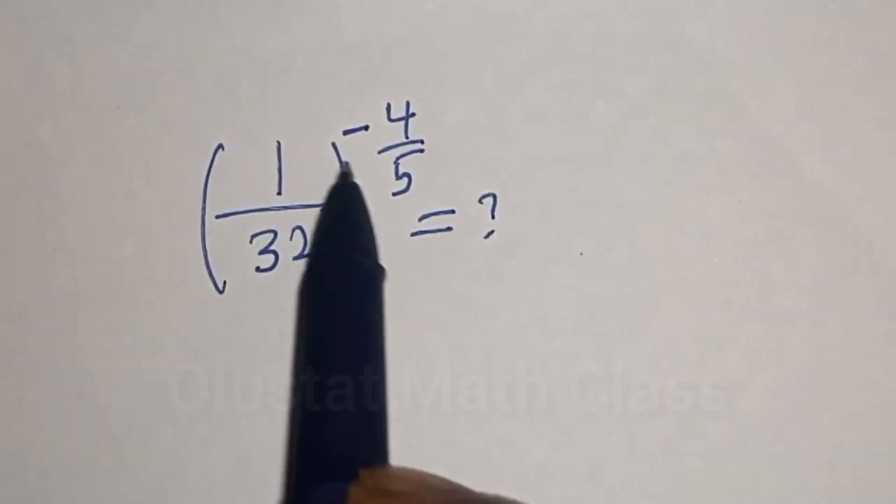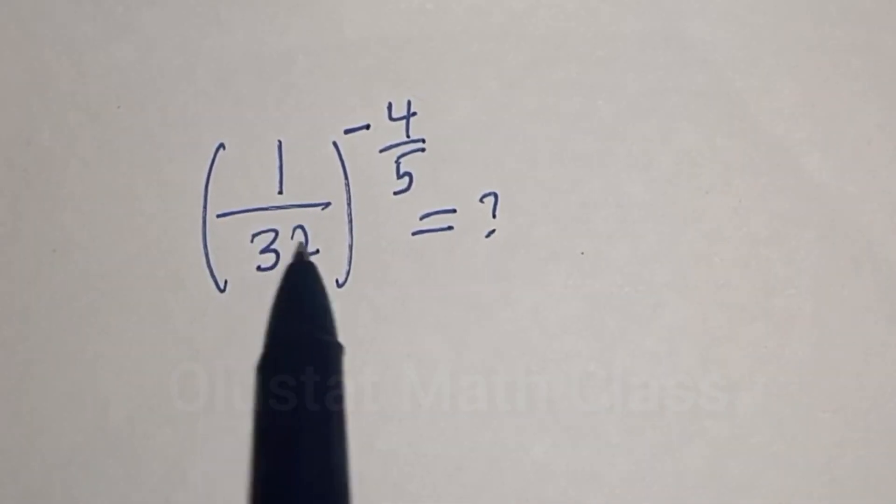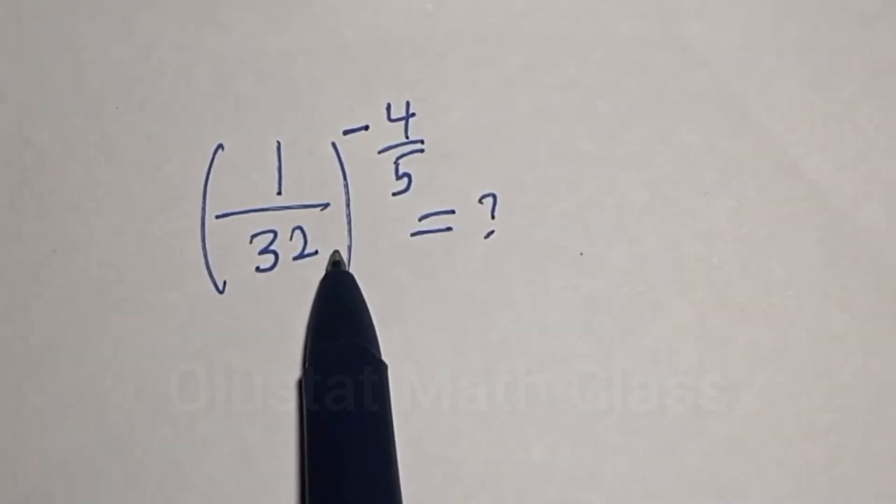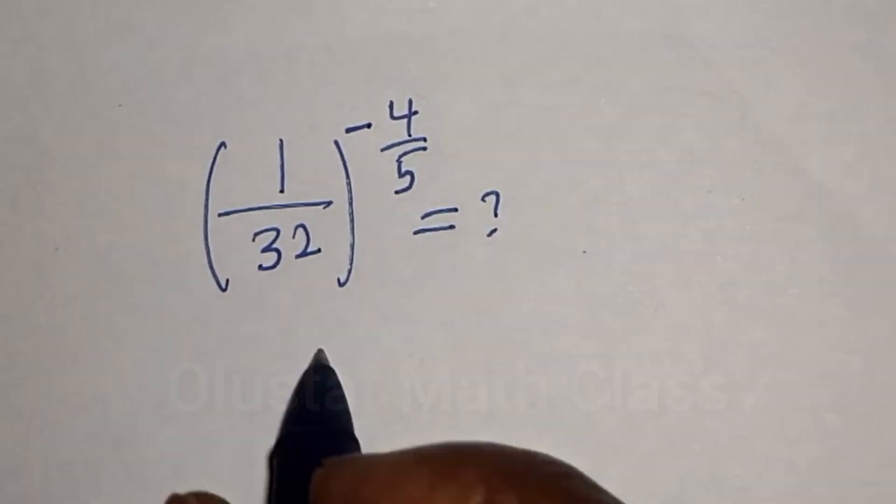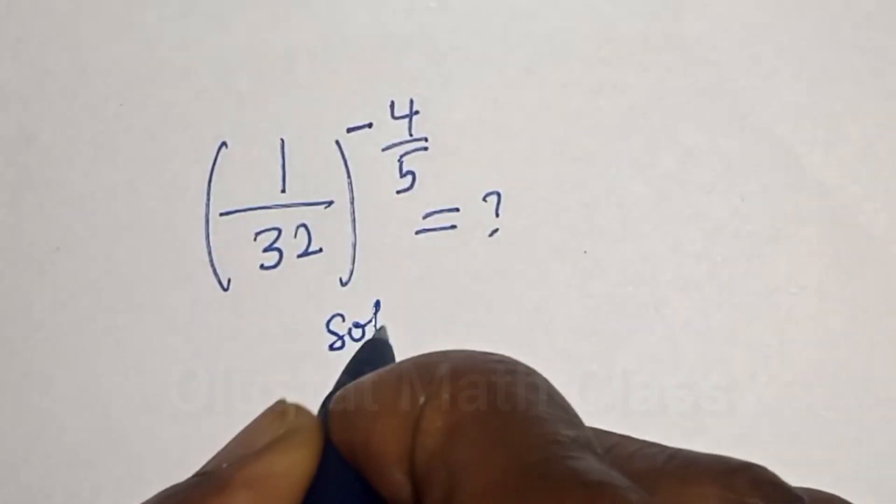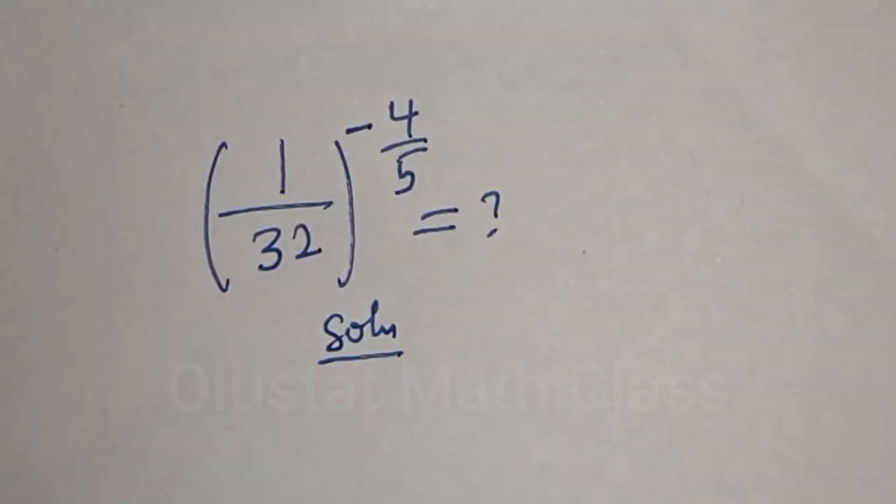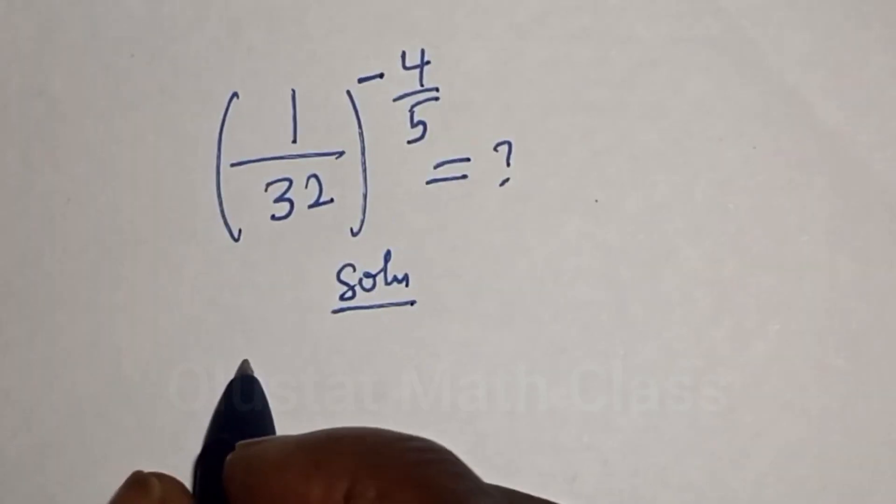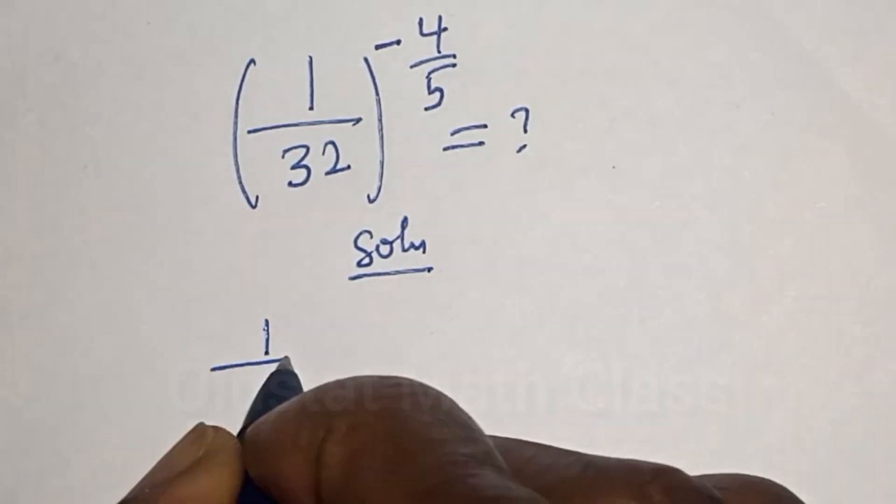Hello, want to simplify this math problem? 1 divided by 32, raised to the power minus 4 over 5. Like, share, comment and subscribe. Solution: 1 divided by 32 can be written as 1 over 2 raised to the power 5.